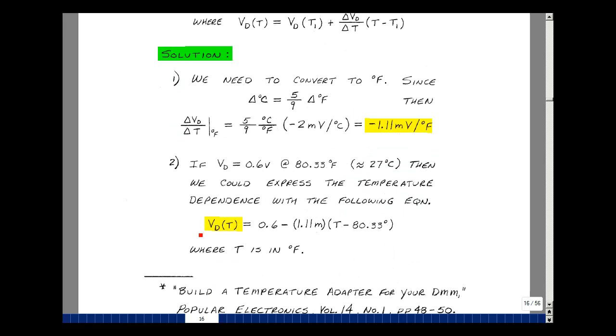We're going to write an expression for our diode in terms of temperature as our value at a reference temperature of 80.33 degrees Fahrenheit, and then the temperature coefficient times the change in temperature. As temperature increases, this number will be negative, and we'll decrease in value. If it gets cooler, it'll go the other direction.